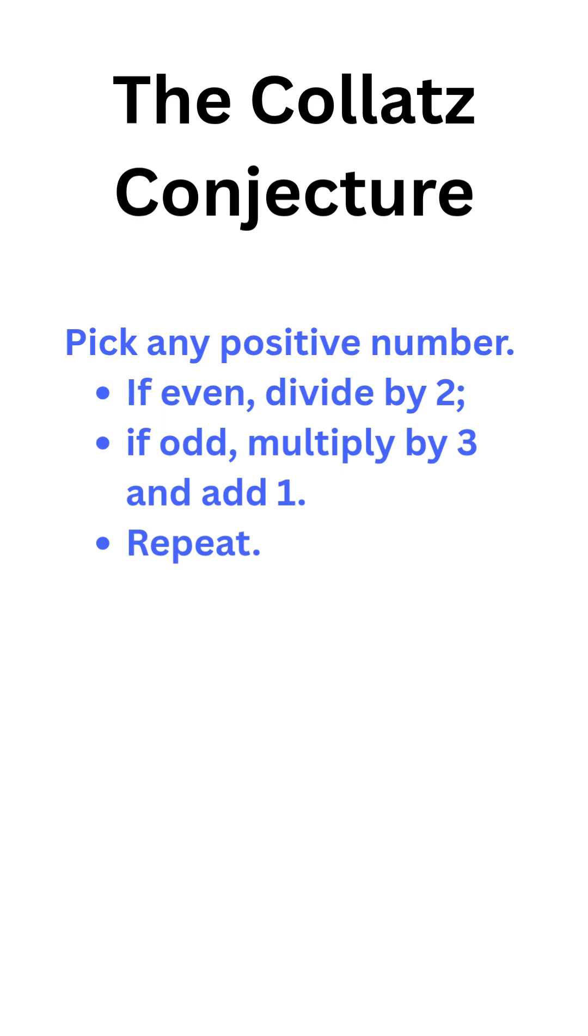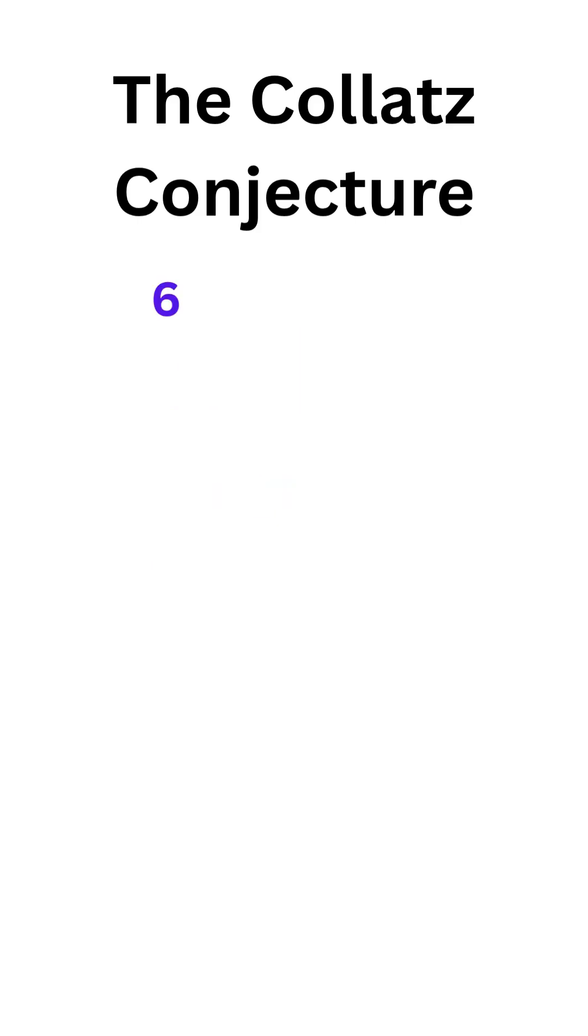This simple rule, when applied repeatedly, generates a sequence of numbers. And the conjecture says that these sequences always reach 1. Let's take an example: 6. Let's apply these rules and see if we can get to 1.